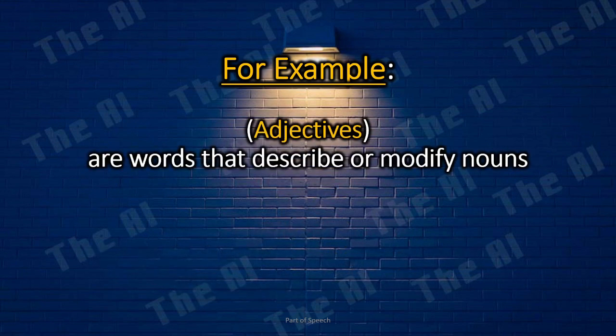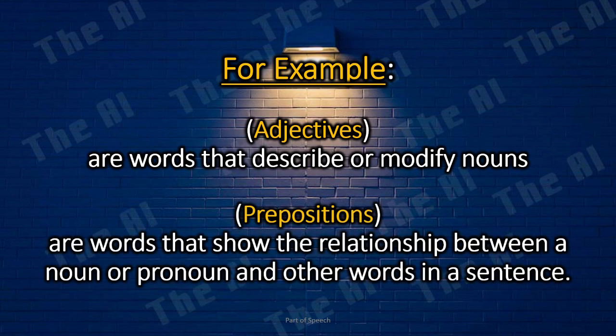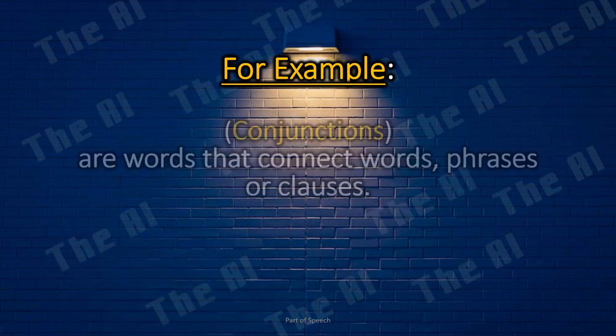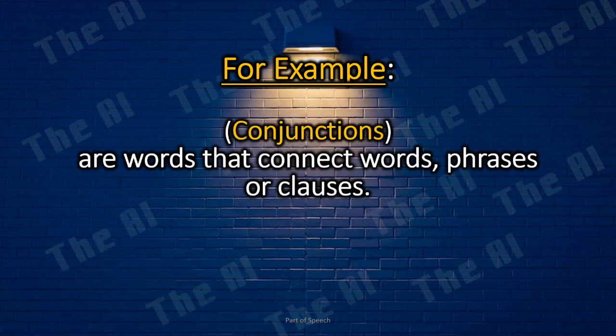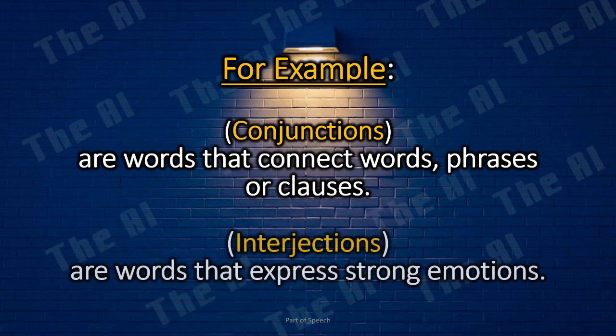Adjectives are words that describe or modify nouns. Prepositions are words that show the relationship between a noun or pronoun and other words in a sentence. Conjunctions are words that connect words, phrases, or clauses. Interjections are words that express strong emotions.